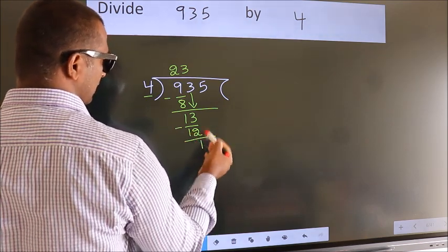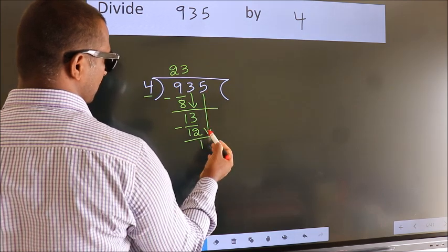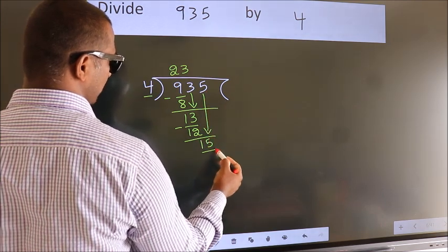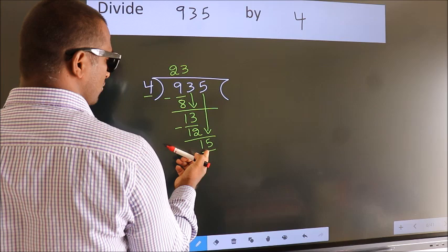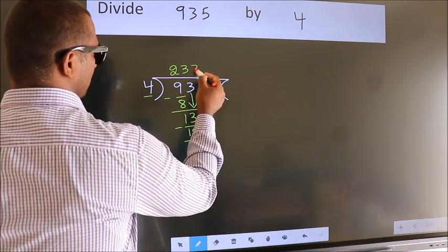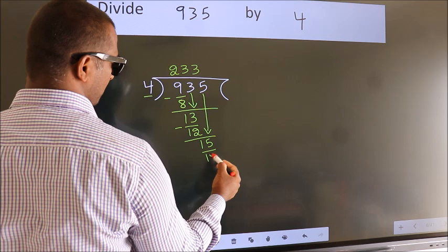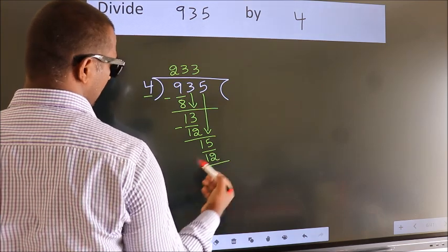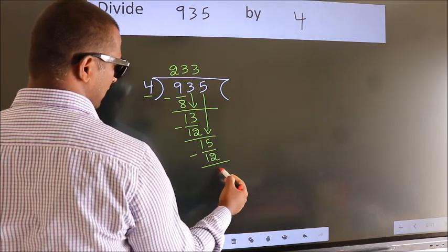After this, bring down the beside number. So 5 down, so 15. A number close to 15 in 4 table is 4 3s 12. Now we subtract. We get 3.